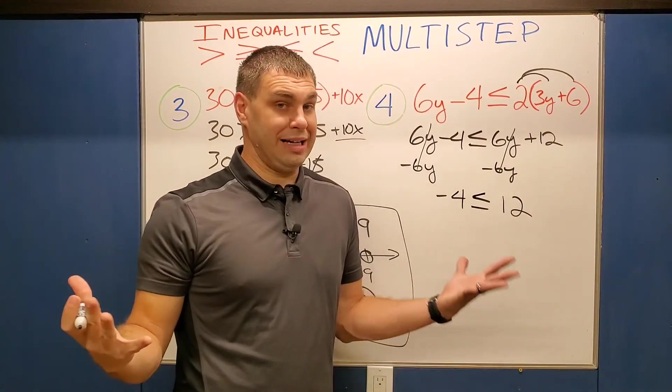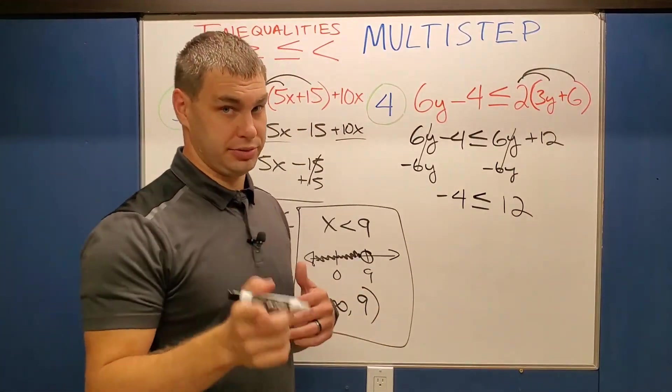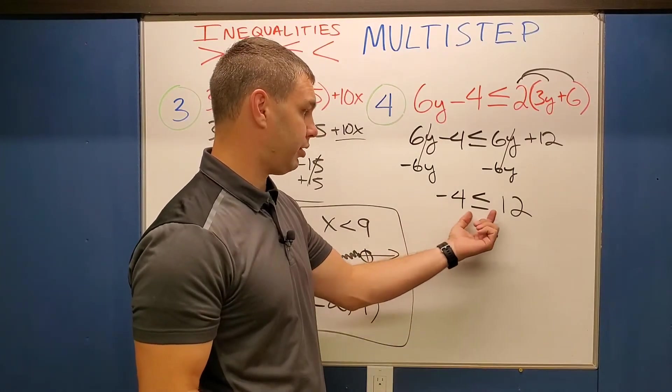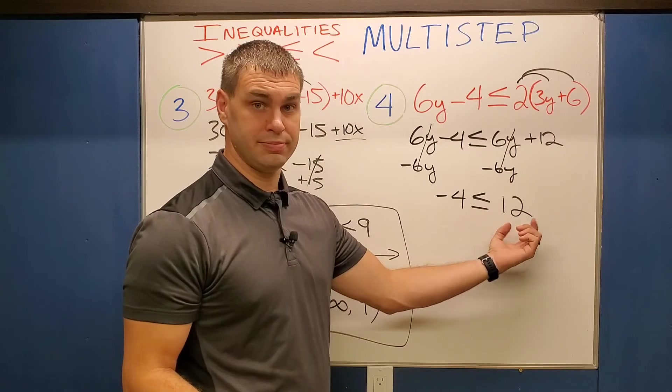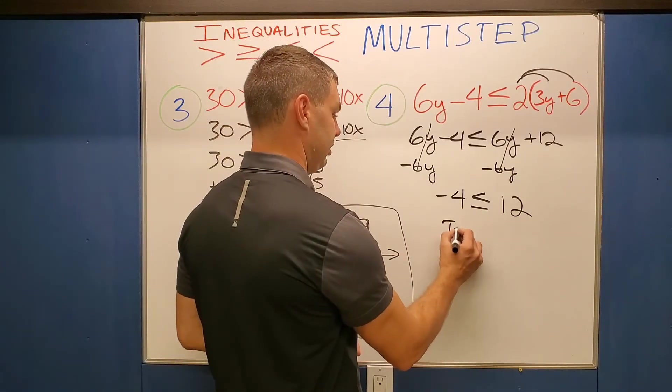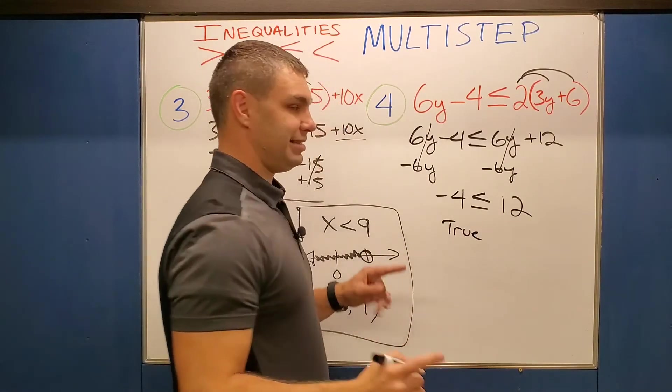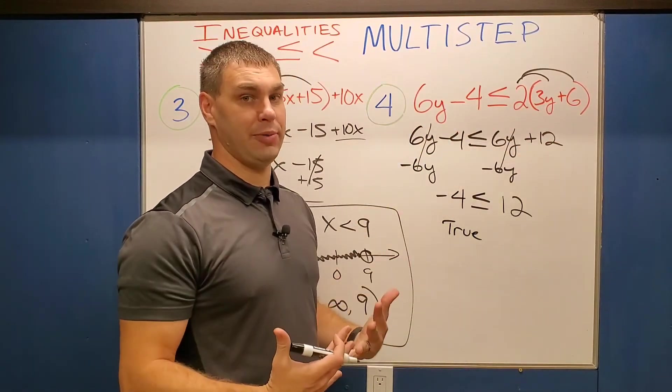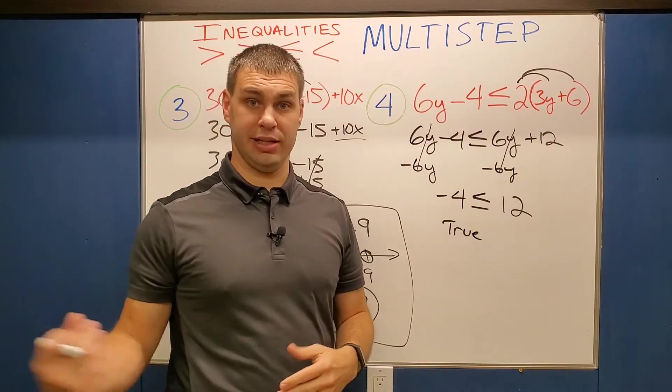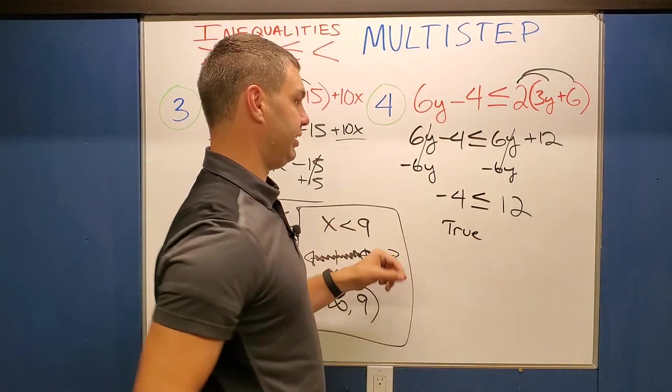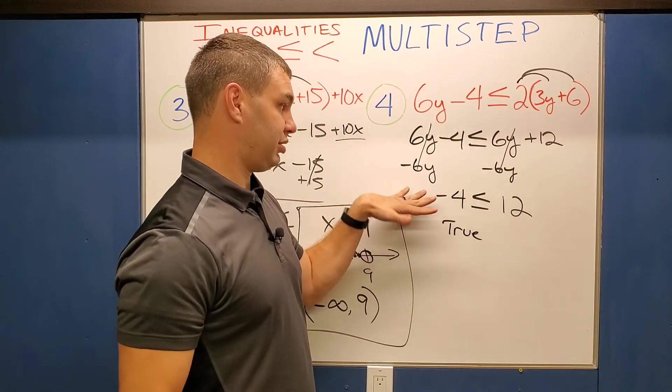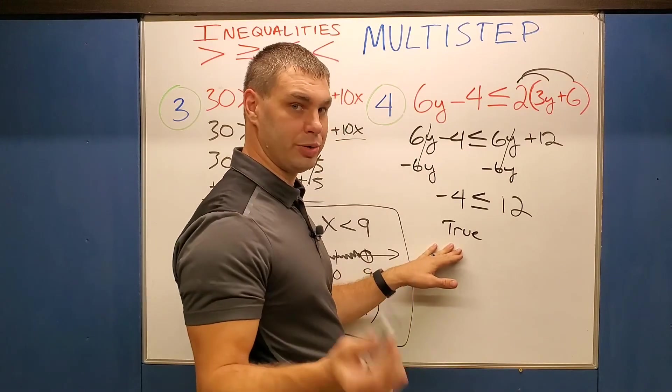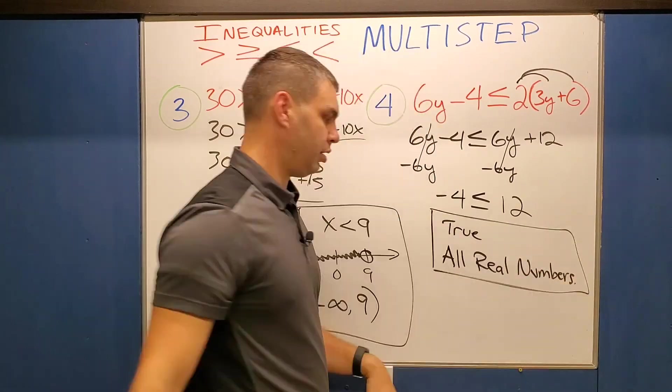All right. Notice there's no y left to solve for here. So we have one of two choices. Either this is going to be true or it's going to be false. In this case is negative 4 less than or equal to 12. Yeah, it is. All right. So this is a true statement. And if it's true, it does not matter what I plug in for y in the beginning here. Any y would work. Whether it's negative 1, negative 1 million, positive 1 million, doesn't matter. That would satisfy this because there would eventually cancel when you plug those in. Meaning that I'm left with this. So it's going to be true. So for this, we can say all real numbers. All real numbers.